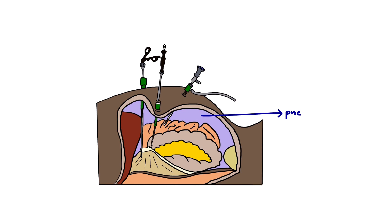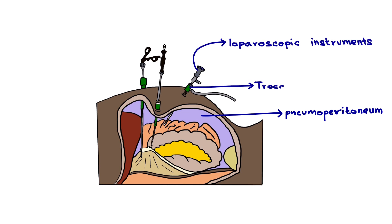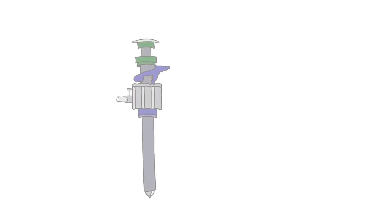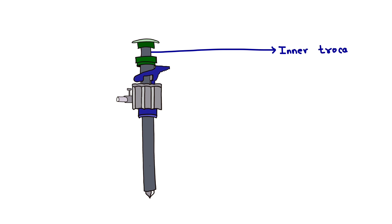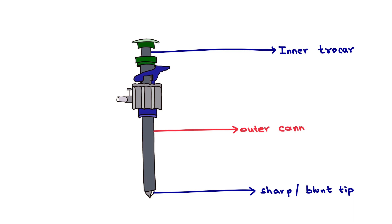After the creation of pneumoperitoneum, laparoscopic instruments are inserted into the abdominal cavity with the help of the trocar and cannula system. The system is made up of two parts: the inner trocar, which can have a sharp or blunt tip, and the outer cannula. The inner trocar is used to penetrate the abdominal wall, and the outer cannula provides a passage for insertion of instruments into the abdominal cavity.